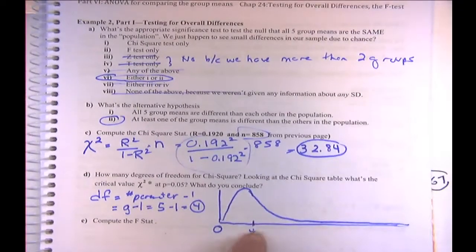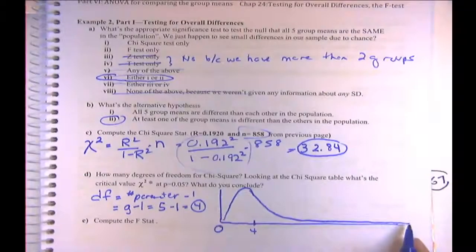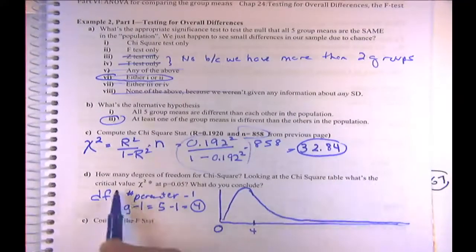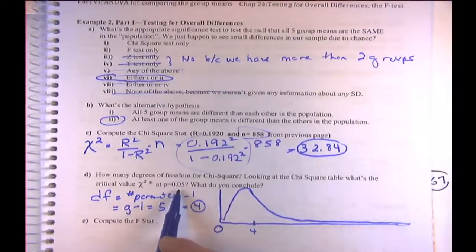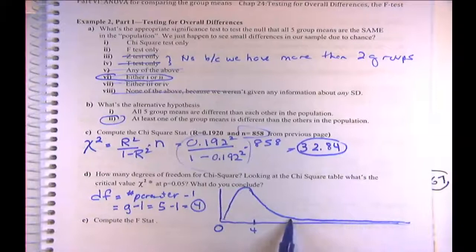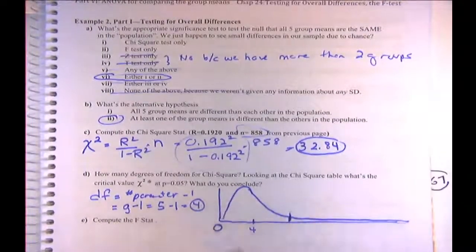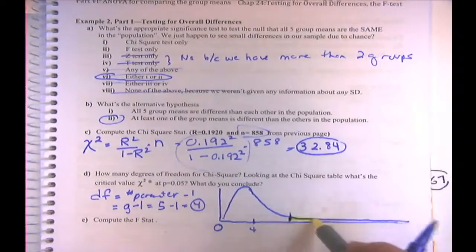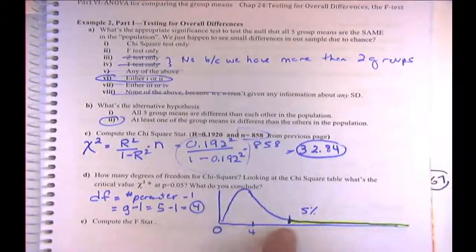Our chi-square is 32.84 — way out in the tail. We're going to reject the null. Let's look at the chi-square table to find the critical value at alpha equals 0.05. We want the value where 5% is in the upper tail.